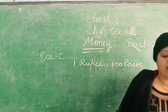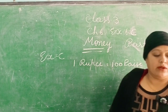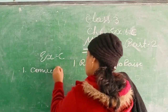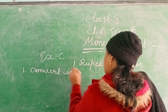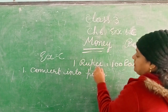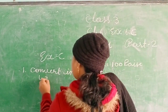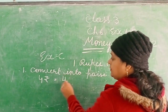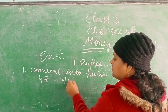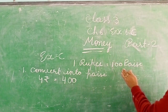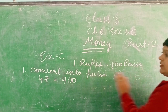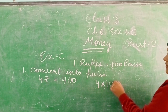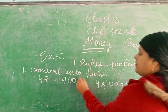Exercise 6C, question number 1: Convert into paise. Rupees diya gaya hai — 4 rupees. Isko paise mein convert karna hai, to aap kya karenge? 4 ke baad do zeros lagaenge. One rupee is equal to 100 paise, so four rupees is equal to 4 multiply 100, which equals 400 paise.